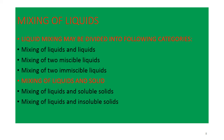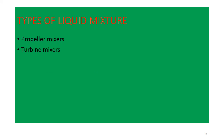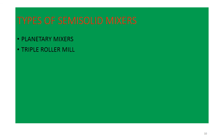Liquid mixers में liquid और insoluble solid होते हैं जैसे suspension. Liquid mixer में दो तरह के mixers use होते हैं: propeller mixer और turbine mixer. Semi-solid mixer में planetary mixer और triple roller mixer होते हैं. Powder mixer में tumbler mixer और agitator powder mixer होते हैं. Tumbler mixer में cubical blender, Y-cone blender, और double cone blender आते हैं — double cone blender pharmaceutical industry में powder mixing में बहुत ज्यादा इस्तेमाल होता है.